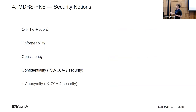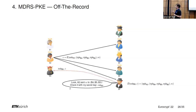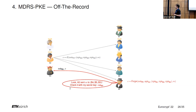The security notions that MDRS-PKE schemes should satisfy include four properties plus anonymity. Off-the-record guarantees the following: suppose A2 sends some message M to a vector of receivers B4, B5, B2. B5, being dishonest, might try to tell A3 that A2 said something — wanting to convince A3, who is not a designated receiver, that A2 spoke. The off-the-record guarantee captures that maybe A2 never said anything, maybe B5 is actually just making it all up. If A3 cannot distinguish ciphertexts honestly generated by A2 from ciphertexts generated by B5, A3 will not be convinced.